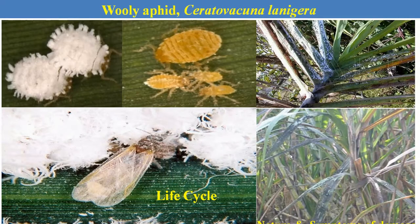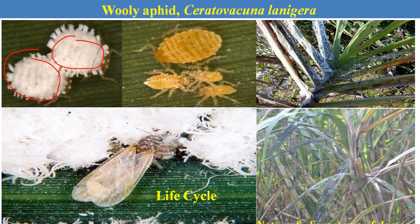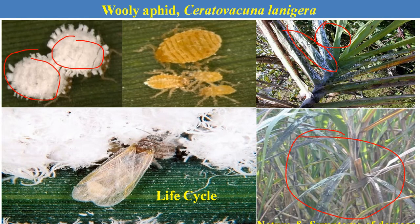The next is the sugarcane woolly aphid, Ceratovacuna lanigera. It is called woolly aphid because the body is covered with a cottony, woolly-like structure. The female aphid does not lay eggs; instead, it directly gives birth to young ones. The aphid may have a winged or wingless form. The nymphs and adults congregate on the tender plant parts and start feeding, sucking cell sap from the leaves, causing the leaves to become yellowish and dry. Black sooty mold also develops due to their honeydew-like secretions, directly affecting the photosynthetic rate and indirectly reducing yield.